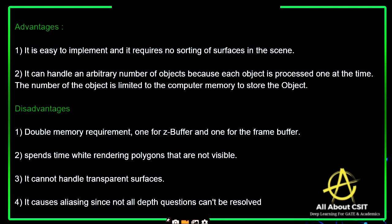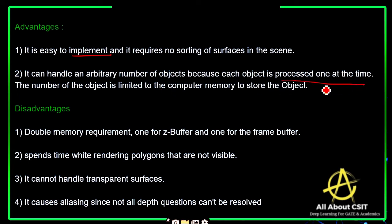The advantages of the Z buffer are: it is easy to implement, it requires no sorting of surfaces in the scene, and it can handle an arbitrary number of objects because each object is processed one at a time and the number of objects is limited only by computer memory.